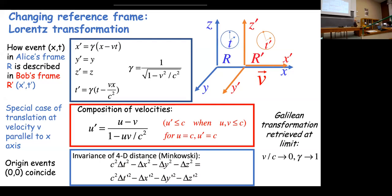At very small velocities, γ approaches 1, and all these formulas reduce to the Galilean/Newtonian transformation. So classical mechanics and classical physics are recovered as the limiting case when velocities are very small compared to the speed of light.